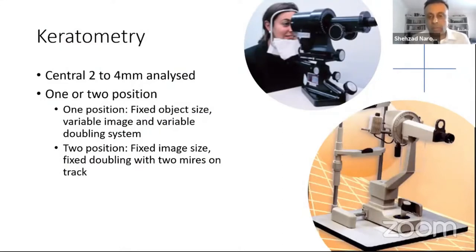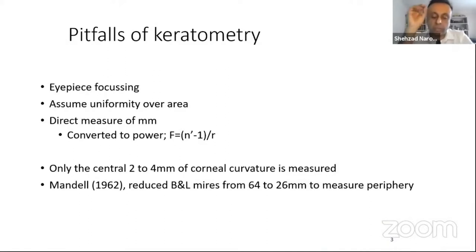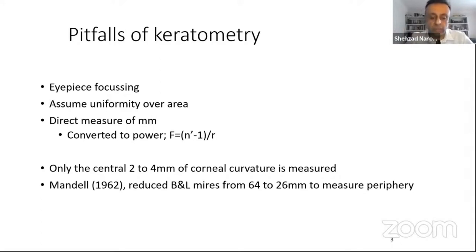Most of us use a keratometer — a manual keratometer or the auto refractor/auto keratometer type device — and with these devices we look at central corneal curvature. We have the one- or two-position type keratometers, traditionally the Bausch & Lomb style, the Zeiss style, and the Javal-Schiøtz type. A main pitfall with a manual keratometer is eyepiece focusing: when students take K readings, you often find small differences because they haven't focused the eyepiece correctly.